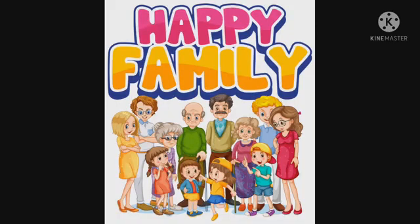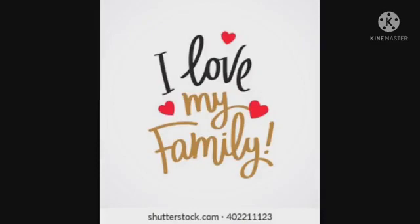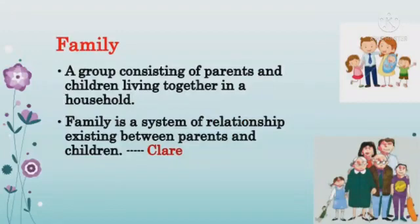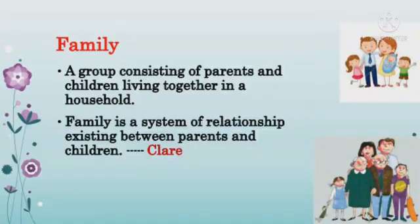This picture depicts a happy family. We all love our family. A family is considered to be the most essential part of a person's life. Every individual is taught about the importance of a family since their childhood days. There are basically two types of family: one is a joint family and one is a nuclear family. A family is a system of relationship existing between parents and children. Our love develops in a family, and a kind of relationship and bond is there in a family.